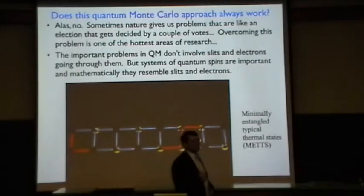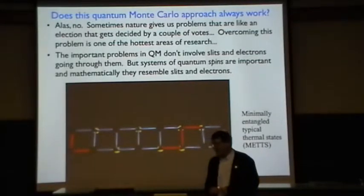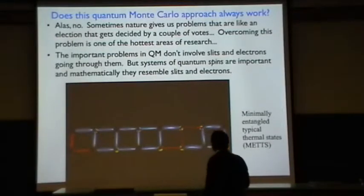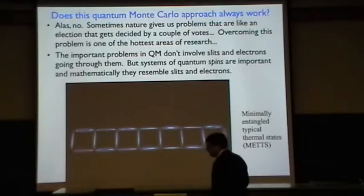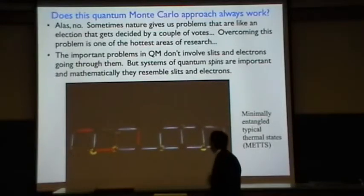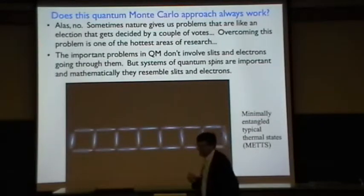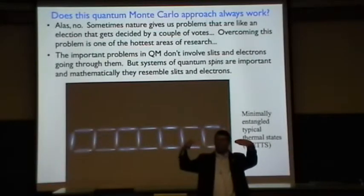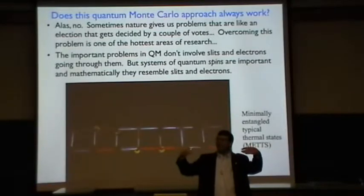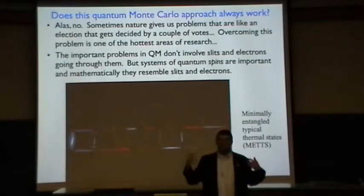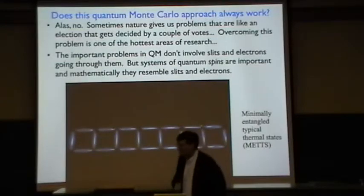Now, does this always work? And the answer is no. Sometimes Mother Nature gives us harder problems than quantum Monte Carlo in its current form knows how to answer. What it looks like is if you had an election that was going to be decided by just a couple of votes. If that were true, you're going to really have to call too many people to be able to decide that answer. So there are physics problems, very interesting ones like the ones most closely related to high-temperature superconductivity that are like that.